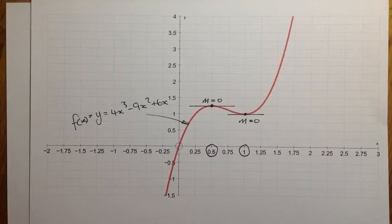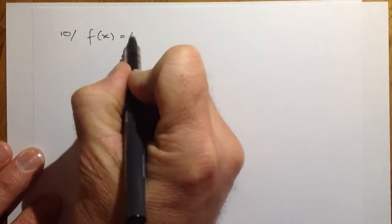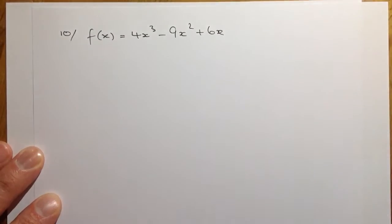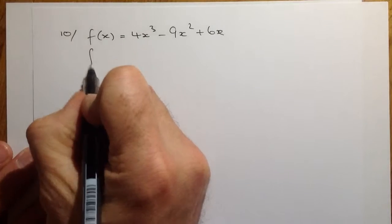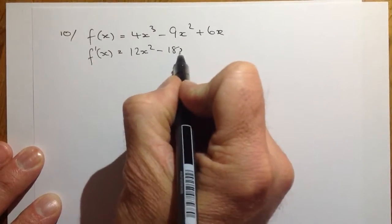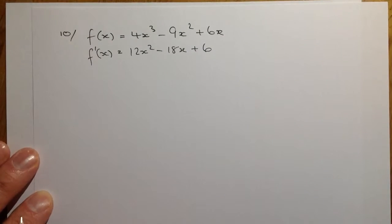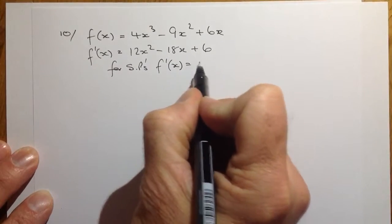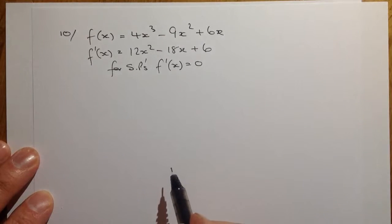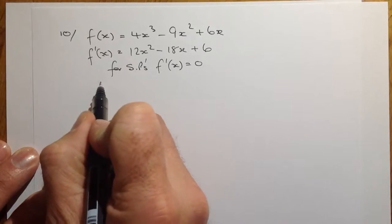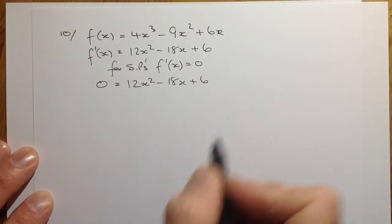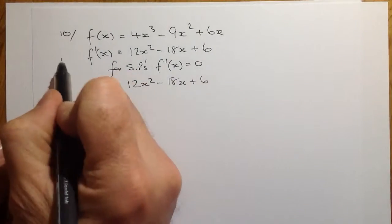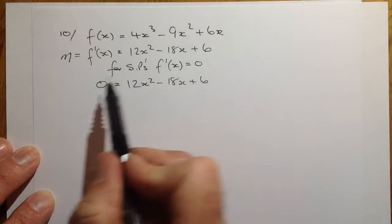Beyond that, I'll finalise the question with a conclusion. So first of all, I'll start off by writing down the equation of the curve. The first thing we'll do is differentiate: f'(x) = 12x² - 18x + 6. After differentiating, we set the gradient equal to 0. So for stationary points, f'(x) = 0. I'll substitute that in and write down this equation here — this is my gradient equation.